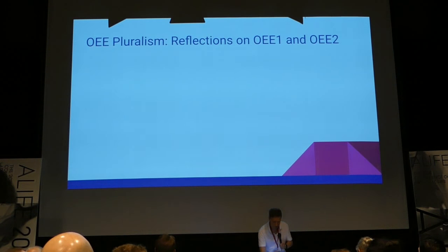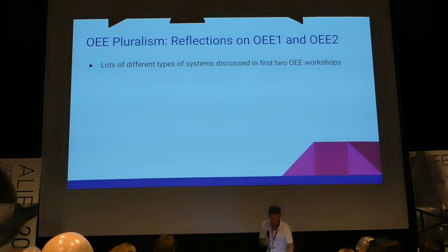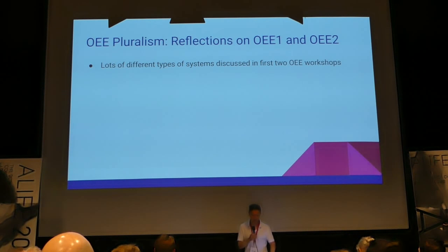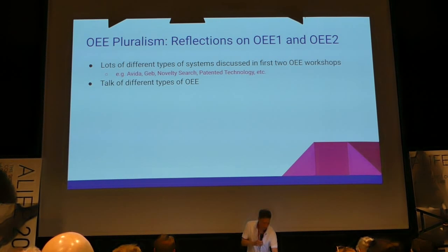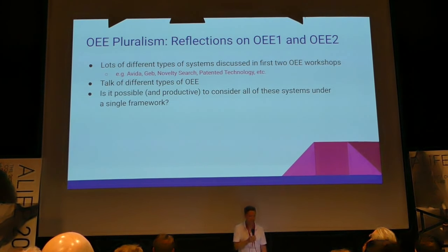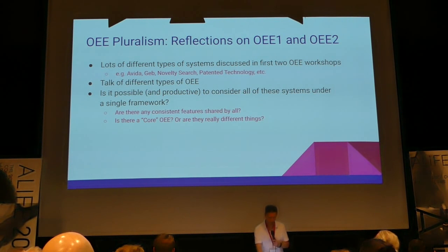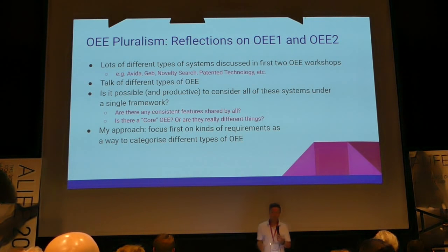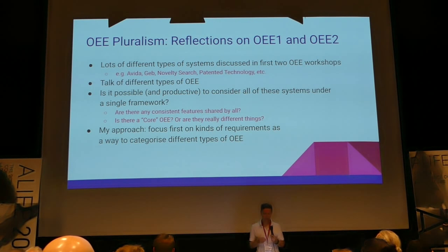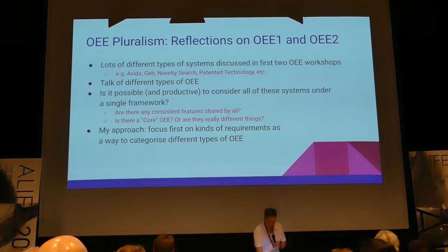Starting with some reflections about the outcomes of the first couple of workshops: lots of different types of systems have been discussed, and talk of different types of open-ended evolution in that first workshop report. So the question is, is it possible or productive to consider all of these systems under a single framework? Are there any consistent features shared by all of them? Is there a core idea of open-ended evolution, or are they really different things?